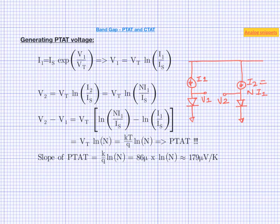This is not a very sharp slope but not so small that we cannot work with it. For example, at minus 40 degrees Celsius the PTAT voltage is around 42 millivolts, and at 125 degrees Celsius it is around 71 millivolts, giving us around 30 millivolts in the difference.